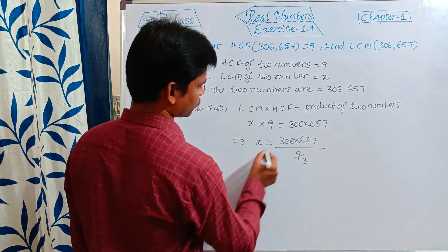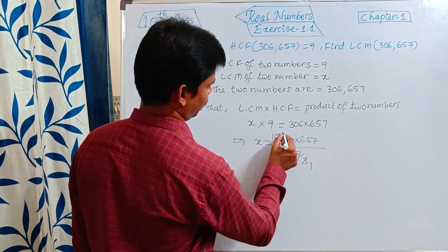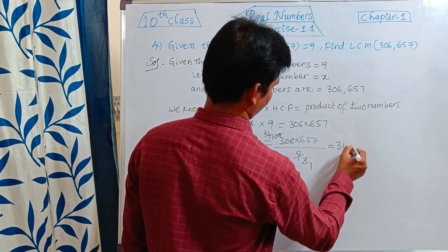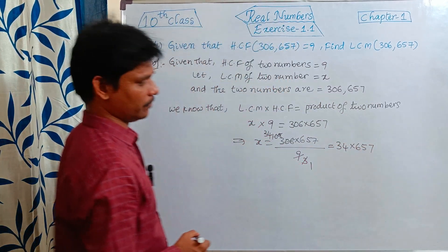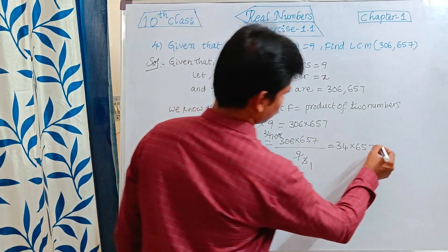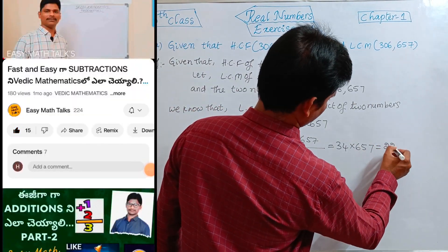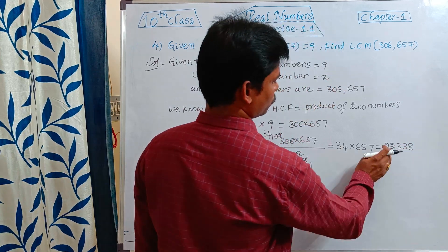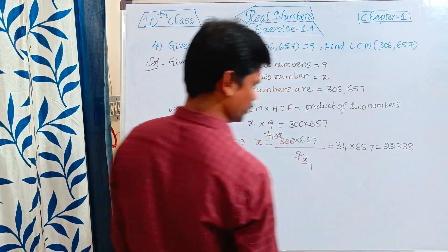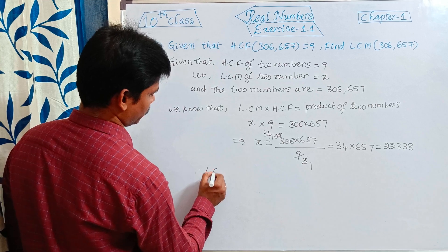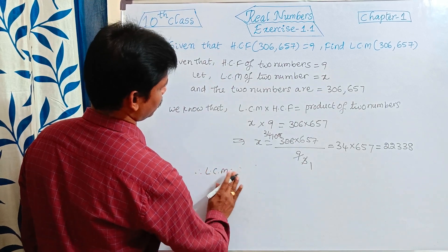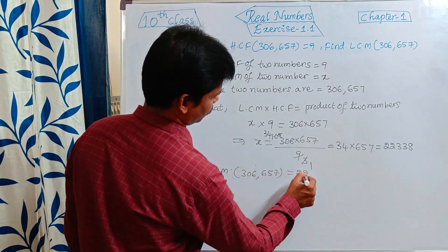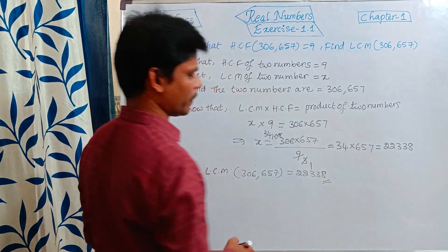Dividing 306 by 9 gives 34. So X = 34 × 657. Multiplying gives 22,338. Therefore, LCM of 306 and 657 is equal to 22,338.